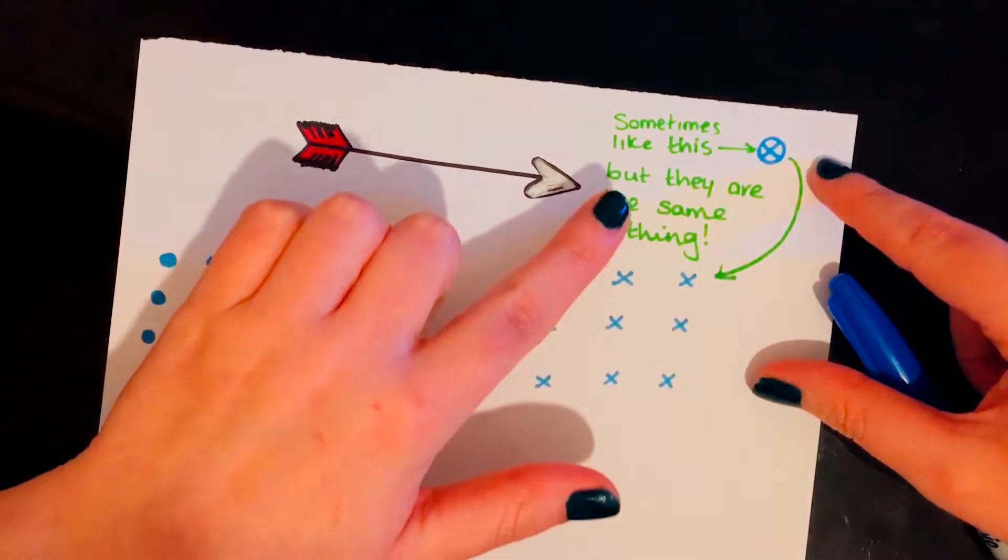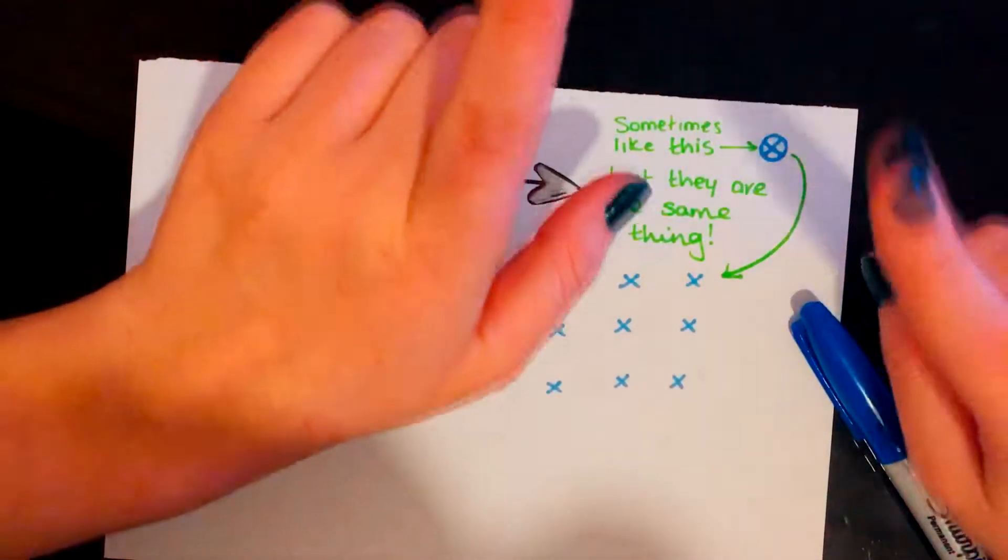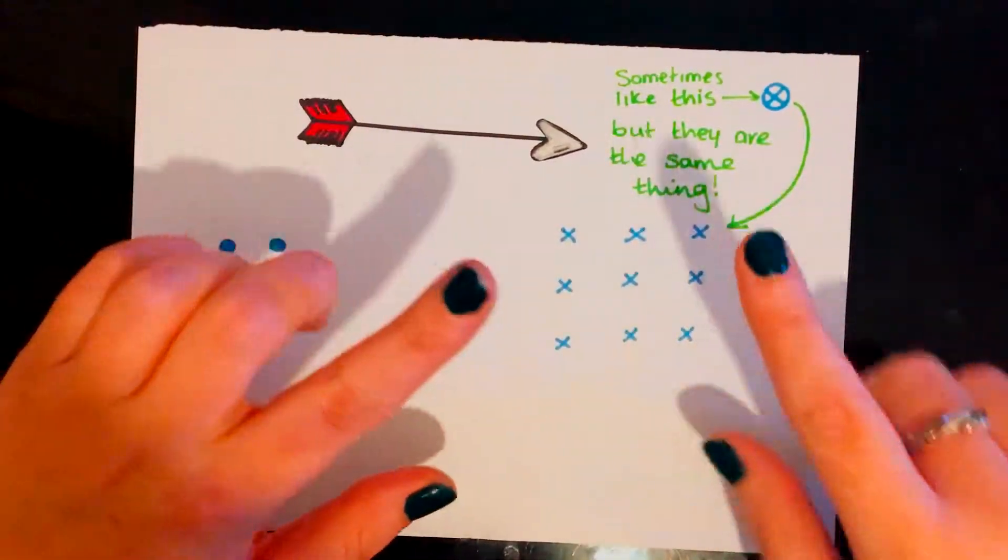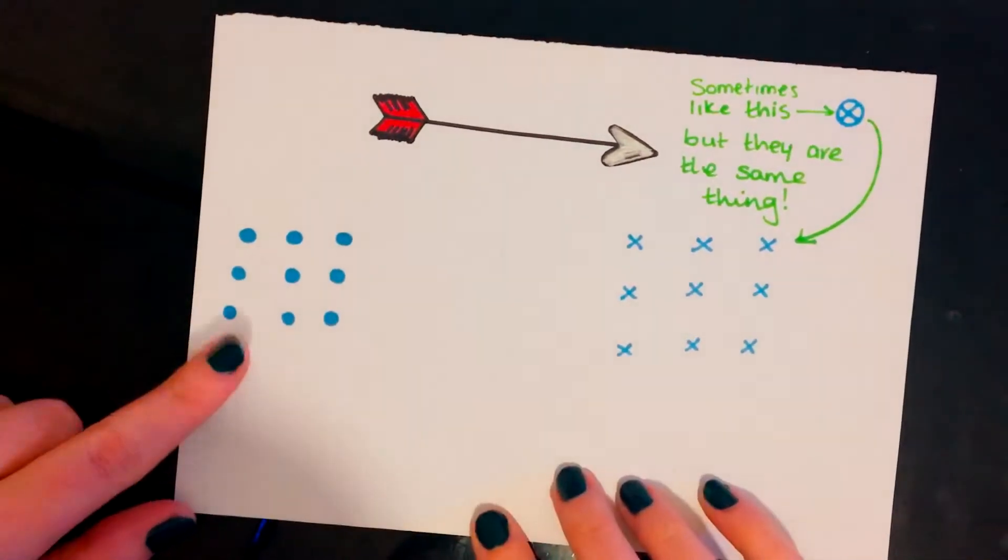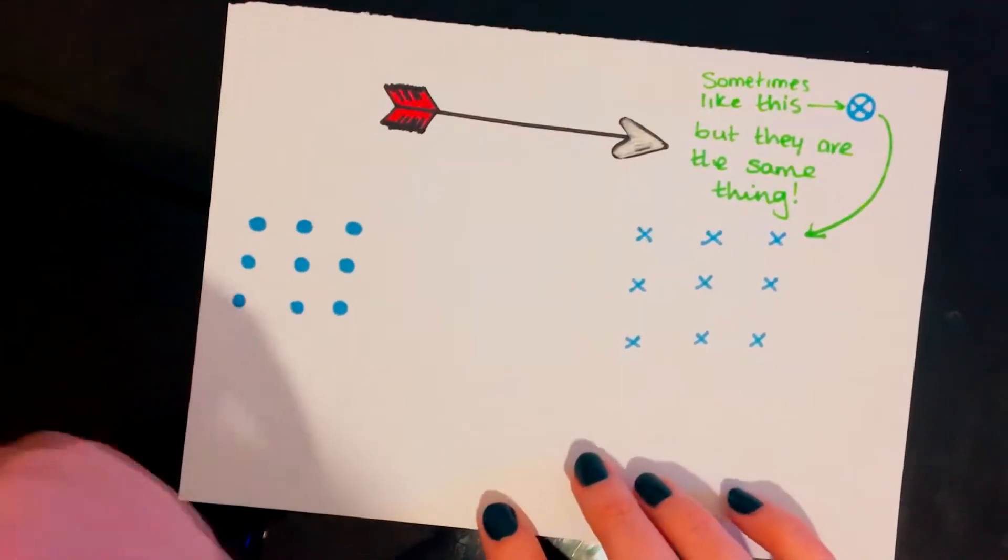Sometimes the cross is circled, it means the exact same thing. Don't let that throw you off, don't let that confuse you in your exam. It's the same thing as just drawing a normal cross, which is the field is going into the page, while here we're saying the field or the magnetic flux density is coming out of the page.